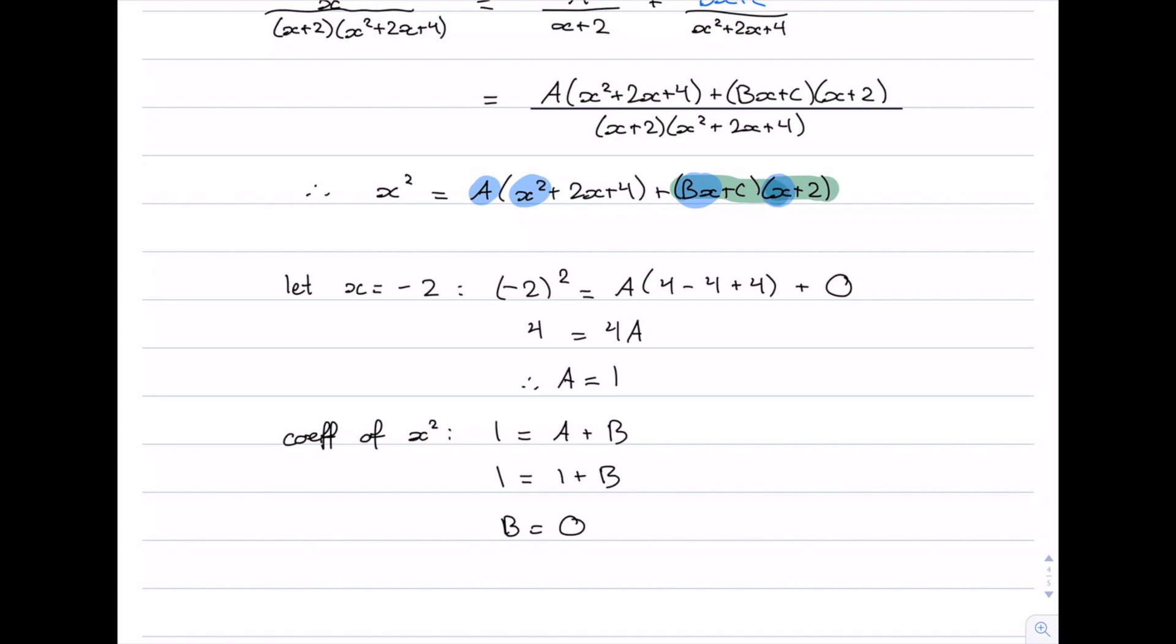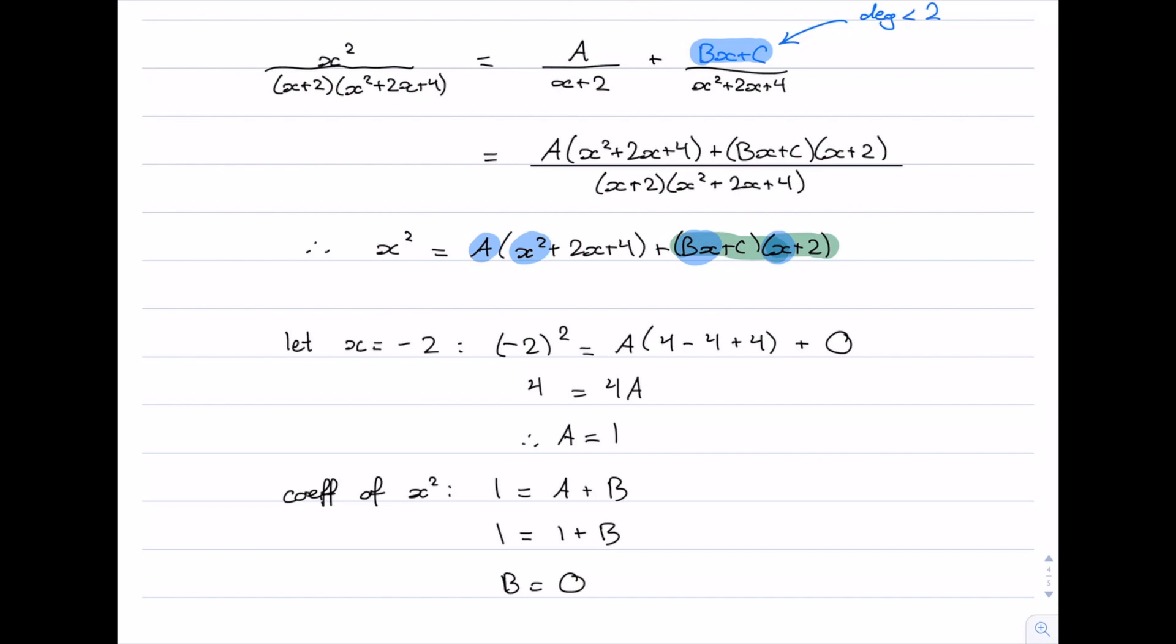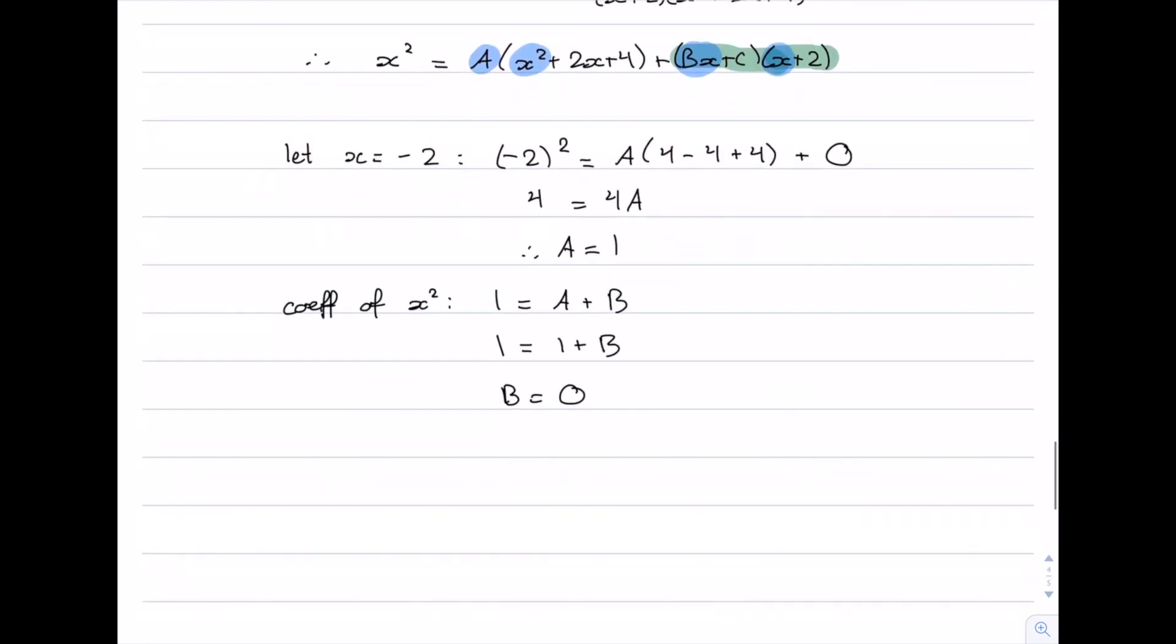So it just happens that in this case, even though we have a Bx+C, the B is actually equal to 0, and it's going to turn out to be a constant term. But we can't assume that from the beginning. Now let's have a look at the constant term, the coefficient of x⁰. On the left hand side, the constant term is 0. And where do we get a constant term? Well we get a constant term by A times 4 and from C times 2. So A times 4 gives us 4A, plus C times 2, which gives us 2C. We already know what A is, we worked that out earlier. That's 4 times 1 plus 2C. And then rearranging for C would give us -2.